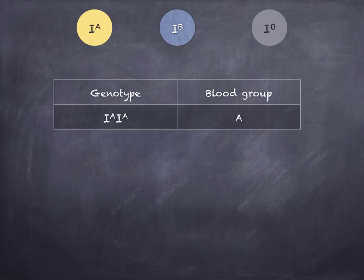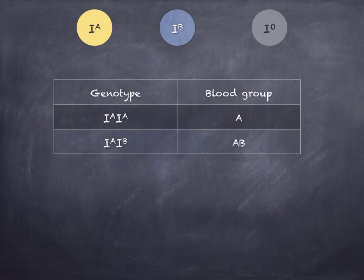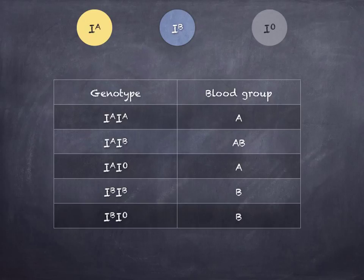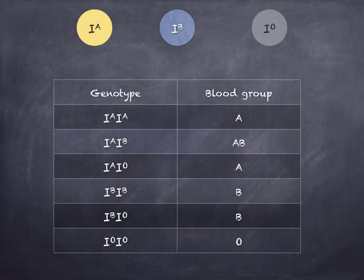As a diploid cell can only carry two alleles, the possible genotypes and phenotypes are: two A alleles gives blood group A; A and B together (codominant) gives blood group AB; A and O gives blood group A because A is dominant over O; B and B gives blood group B; B and O gives blood group B because B is dominant over O; and two O alleles, being homozygous recessive, gives blood group O.